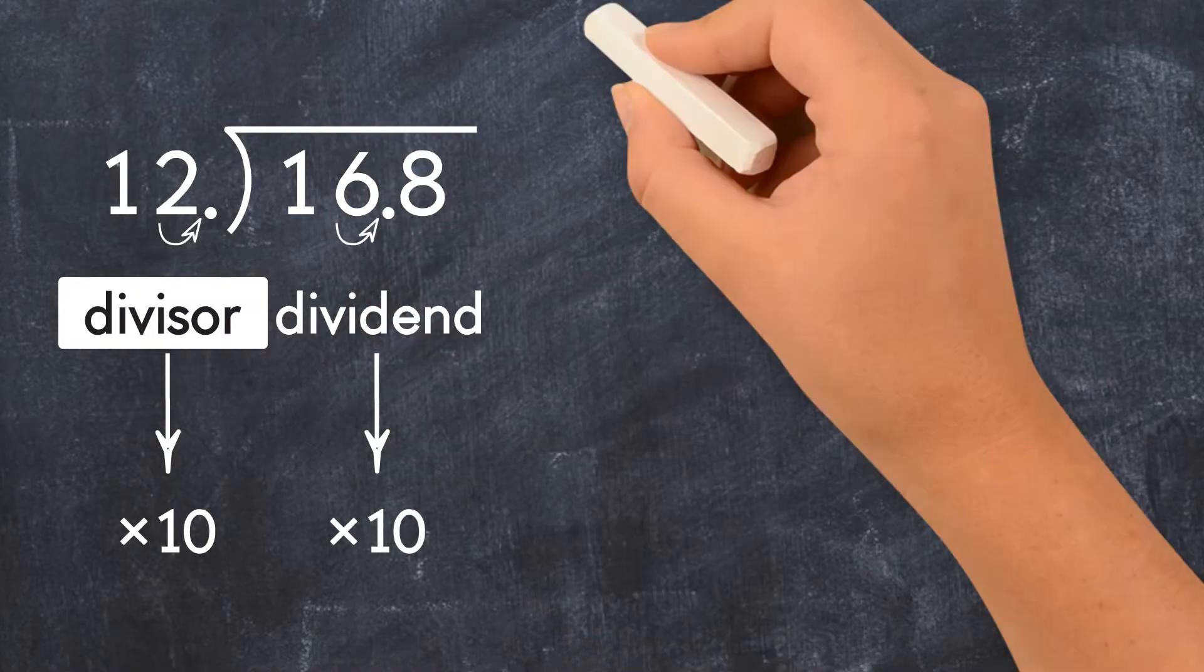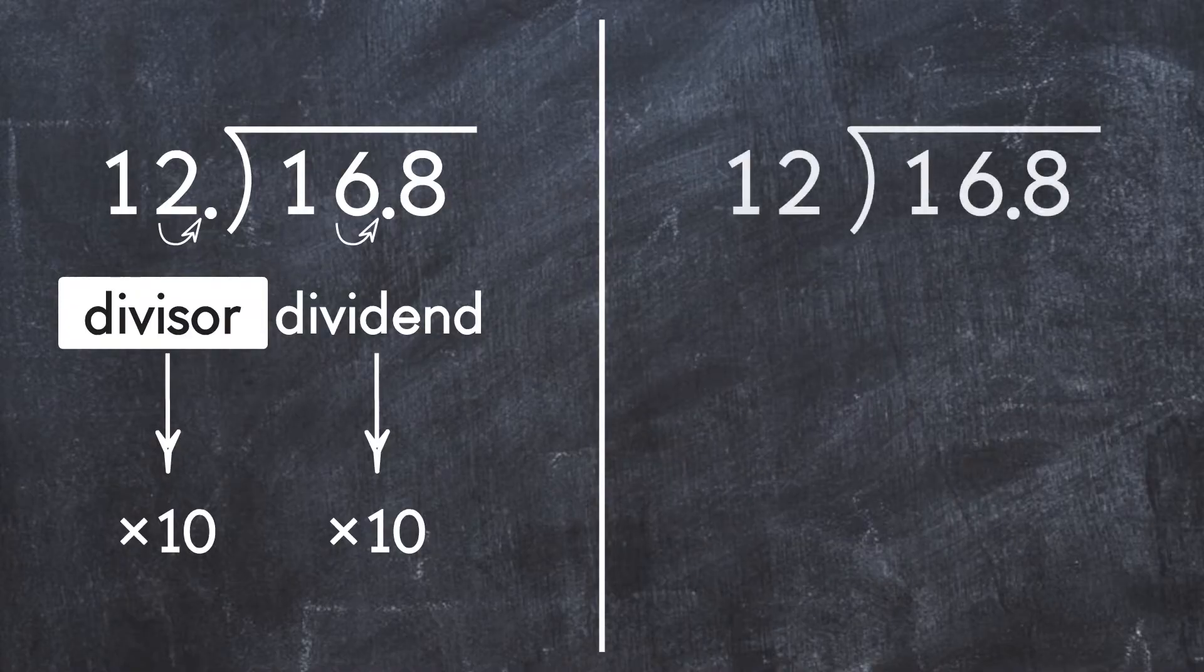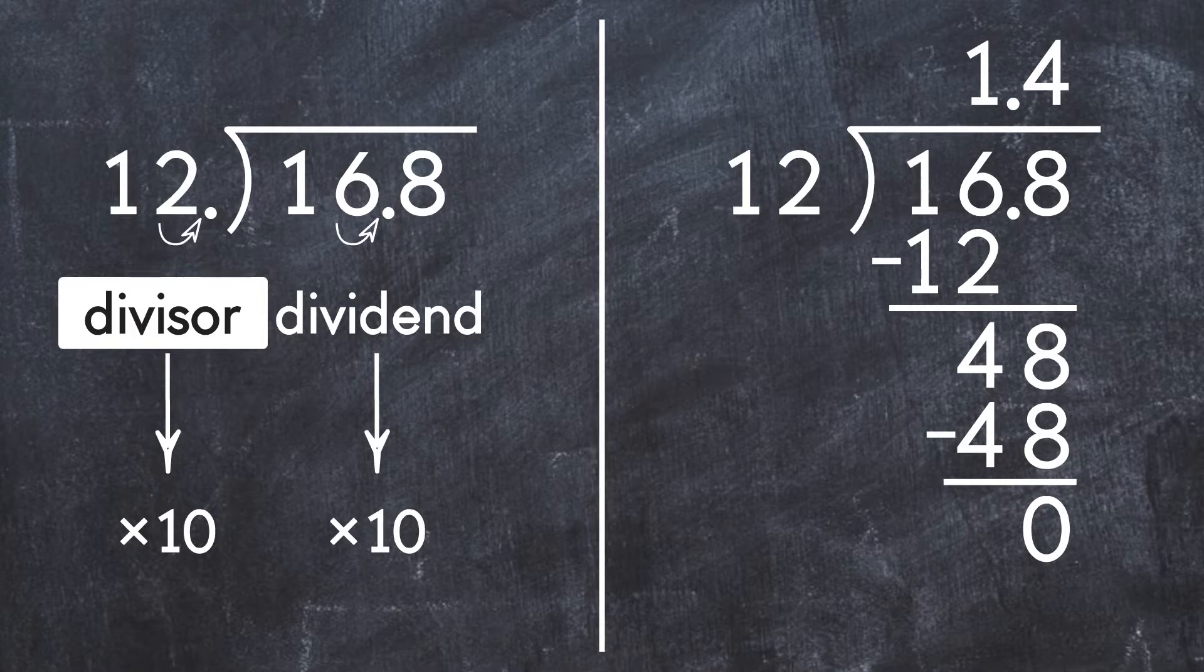Now we have 16.8 divided by 12. We solve by long division and we get 1.4. So 1.68 divided by 1.2 equals 1.4.